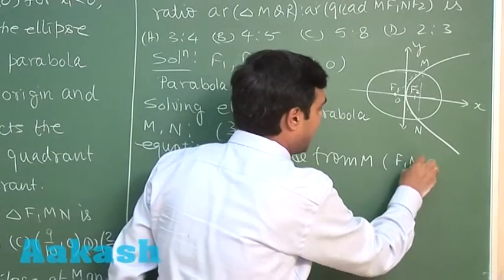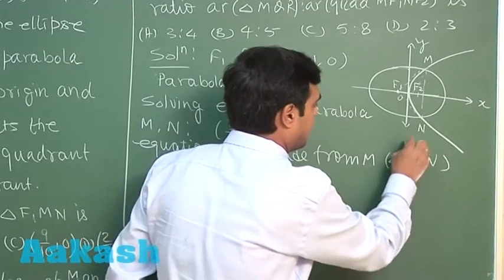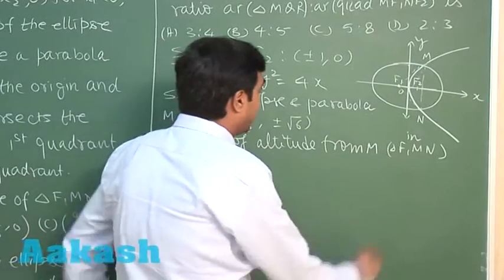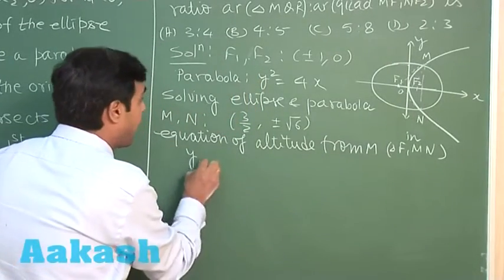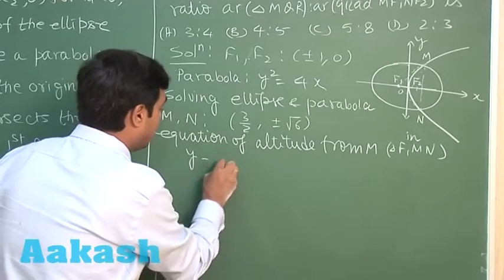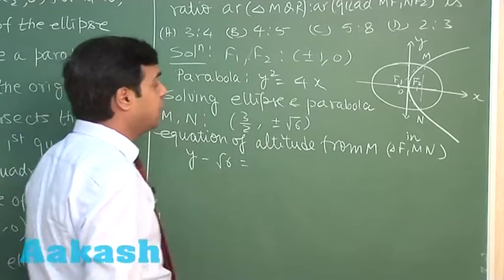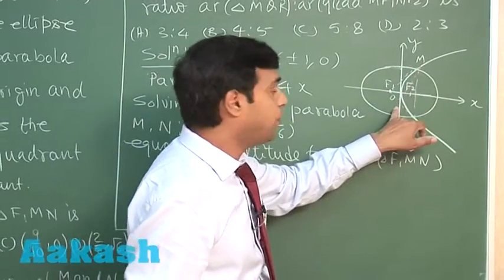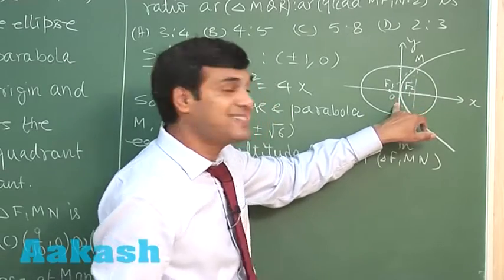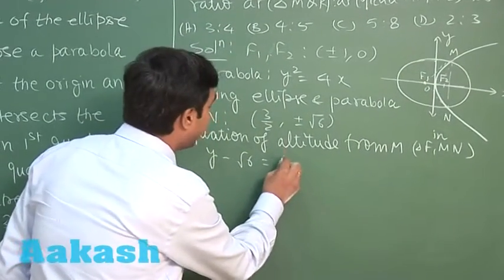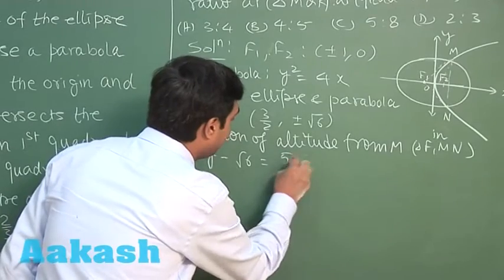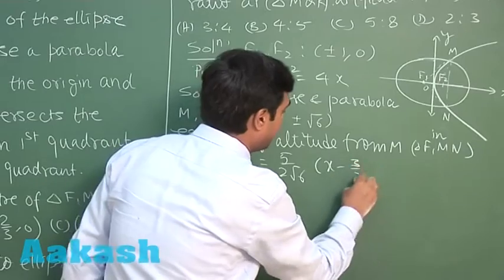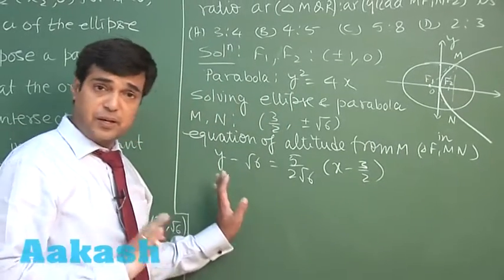Equation of altitude from M in triangle F1MN. Right, equation of altitude from N, we can find this one as y minus root 6 equals the slope of FN. First we can find the slope of F1N and then we can obtain the slope of M, say this point as T. So this comes as 3 by 2 plus 1, that is 5 by 2 root 6, x minus 3 by 2. This is clear, we can get the equation.